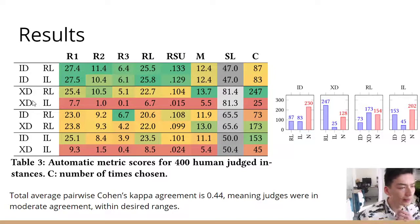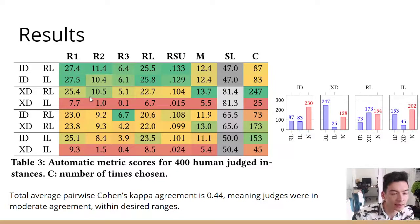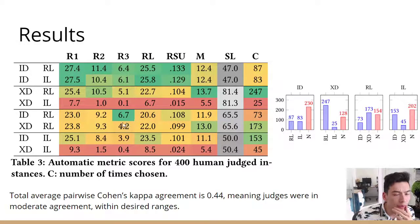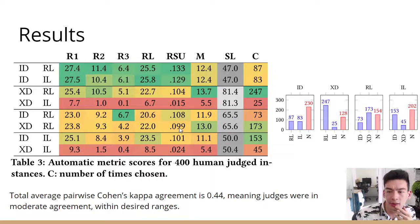Moving on to the cross-domain comparison — trained on CNN Daily Mail and tested on GigaWord — it was clear that RL was a lot better in both all the metrics and the human judgments. In the cross-domain versus in-domain comparison for RL, it was interesting to see that the metrics didn't fully agree with the human judgments, with Rouge-3 and Rouge-SU disagreeing with humans, who were choosing the cross-domain model as being better.